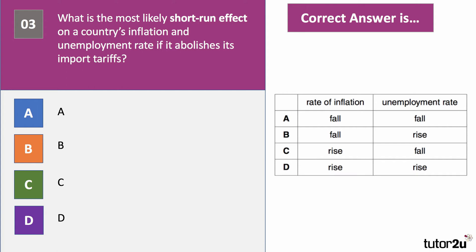A country has cut its import tariffs to zero, which affects both the demand and supply side of the economy. The correct answer is B — inflation will fall and unemployment will rise. A fall in tariffs means the country can now import goods and services more cheaply, bringing down the rate of inflation. However, there's likely to be a contraction of domestic production as imports replace domestic output, so there could be a rise in unemployment.